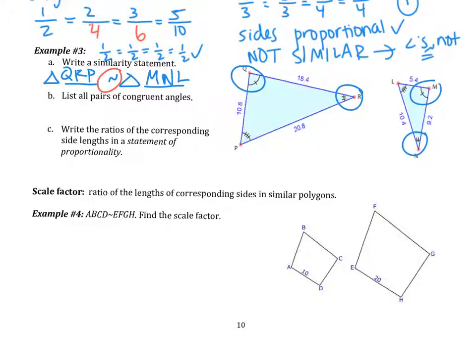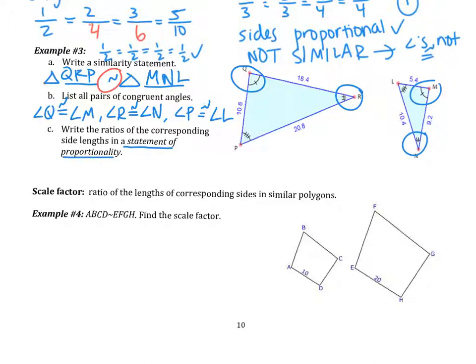Now we list all pairs of congruent angles. You can look at the figure or the similarity statement. Angle Q is congruent to angle M, angle R is congruent to angle N, and angle P is congruent to angle L. If two figures are similar, all their angles are congruent to their corresponding angles.